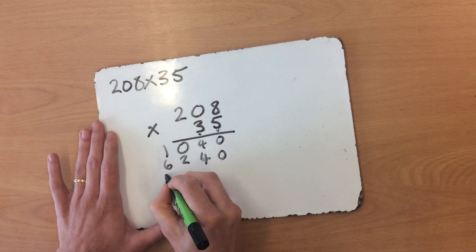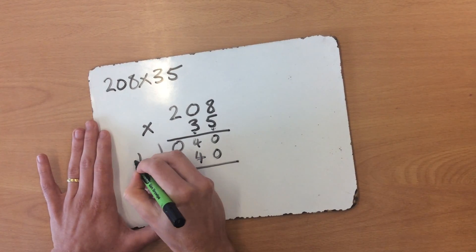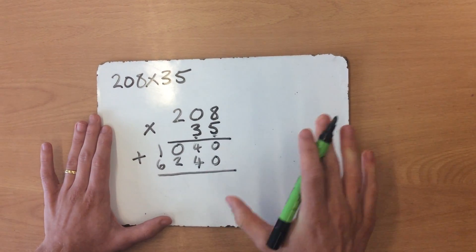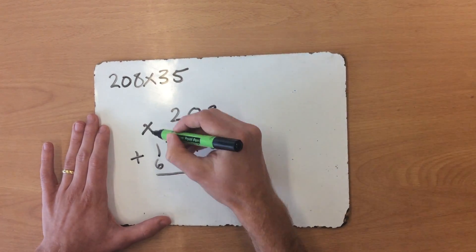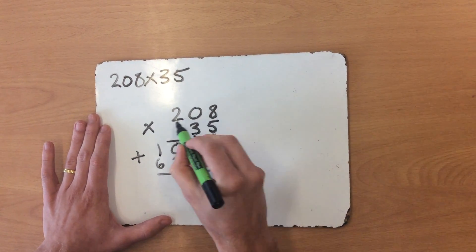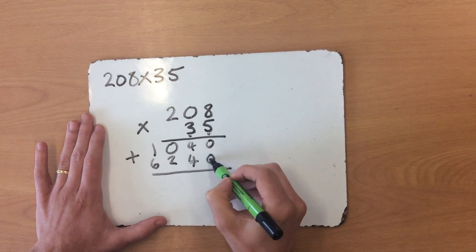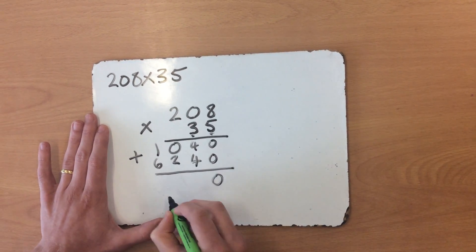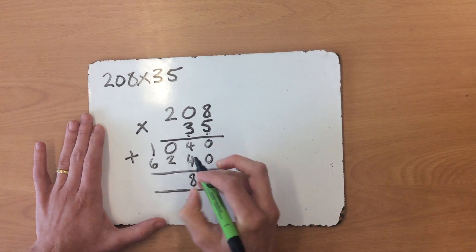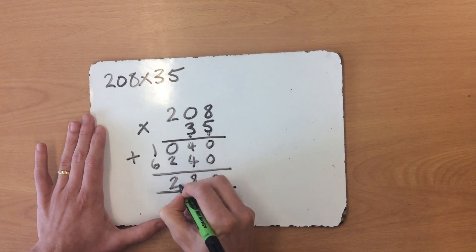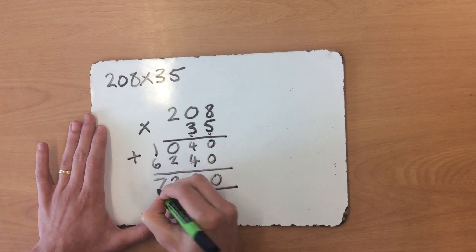Now I've completed my calculations, all I need to do is add it up. Hopefully you'll realize the importance of making sure your place value is in the correct columns. I don't need to add any of this, I only add my answers. 0 plus 0 is 0. I'll do another equal sign here. 4 plus 4 is 8. 0 plus 2 is 2. 1 plus 6 is 7. So the answer is 7,280.